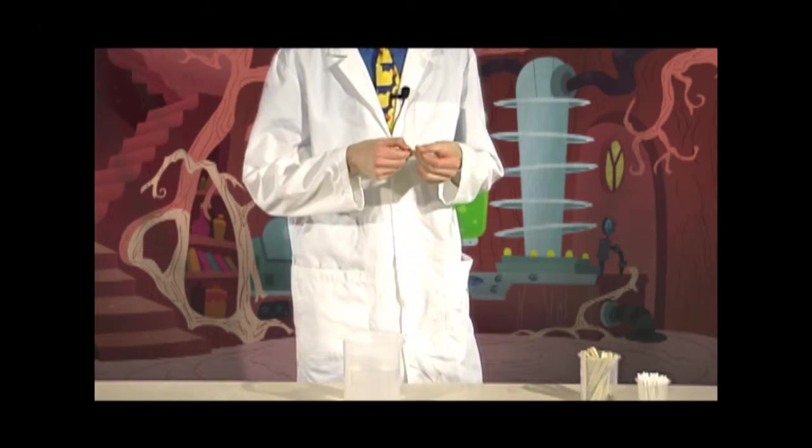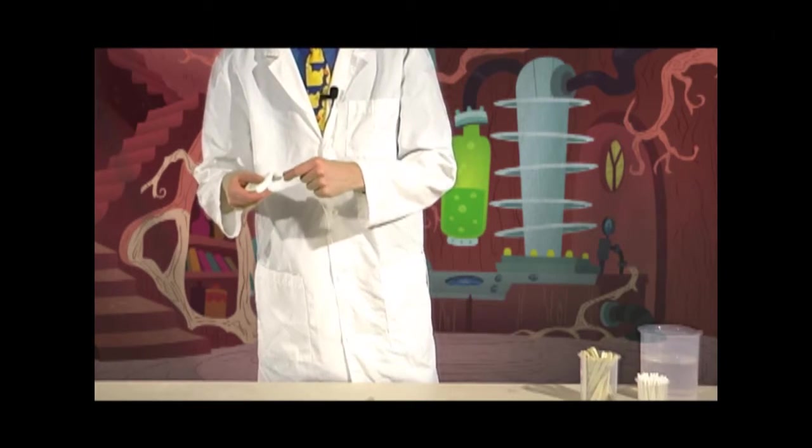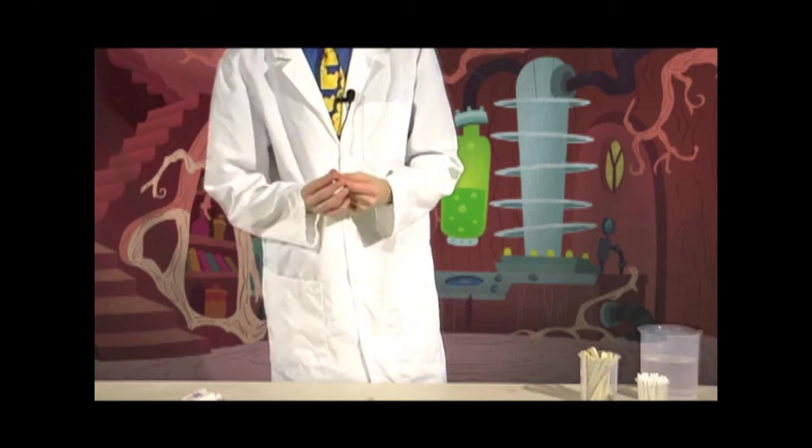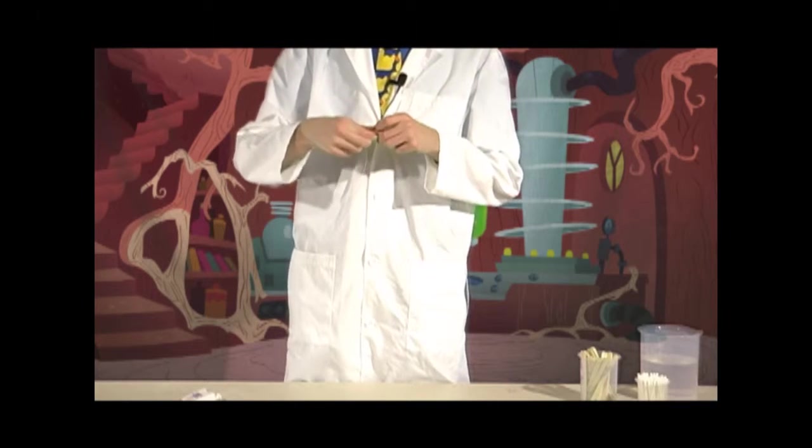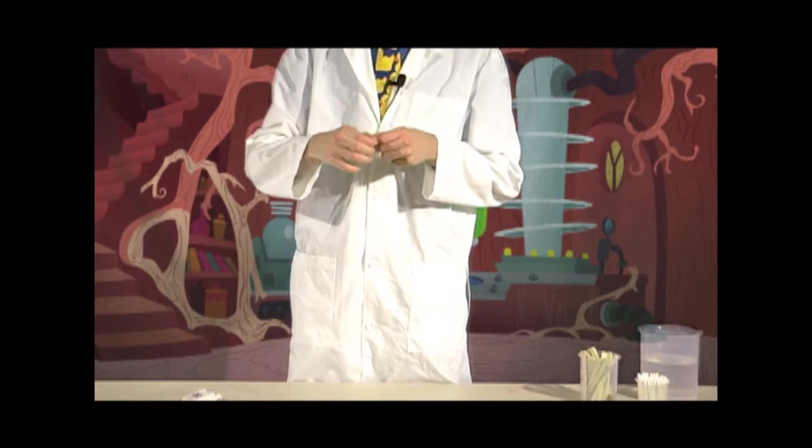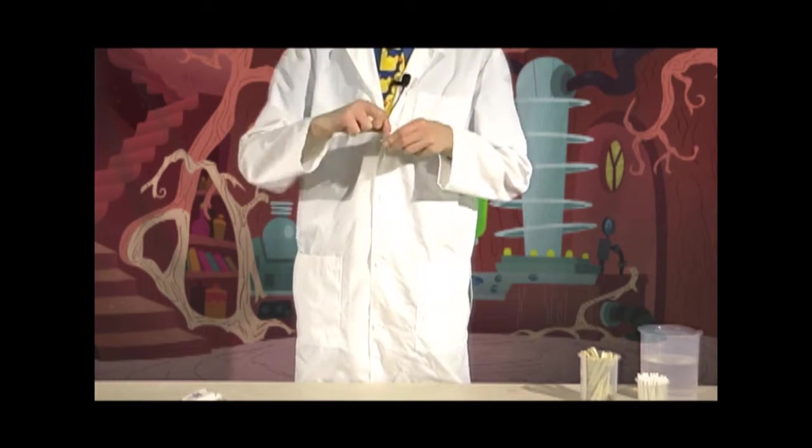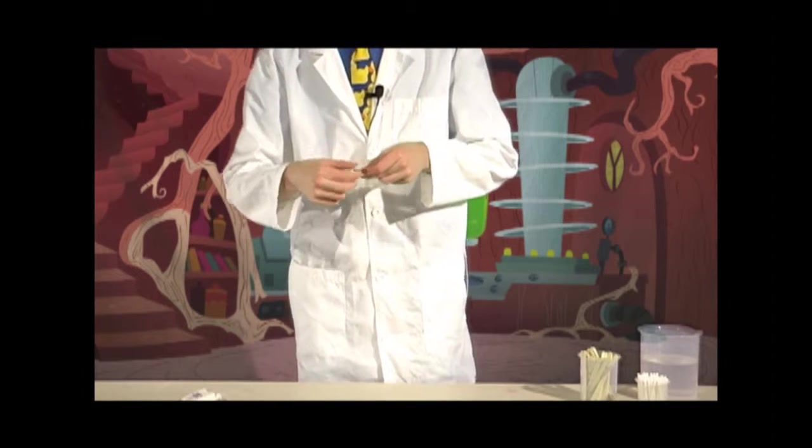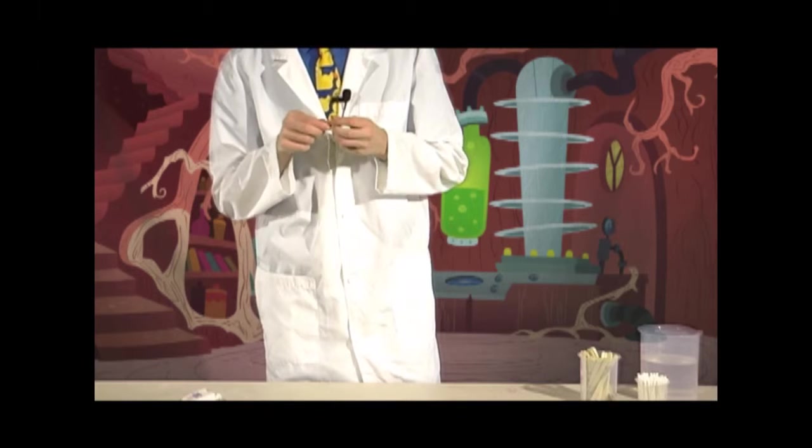Alright, next, what you're going to want to do is take your floss, cut off a piece of it, and then you're just going to wrap it around your popsicle stick.